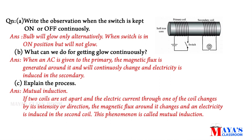Next question: Write the observation when the switch is kept on or off continuously. When the switch is on or off alternately, the bulb will glow only alternately. When the switch is in the ON position, the bulb will not change — it will glow only alternately.